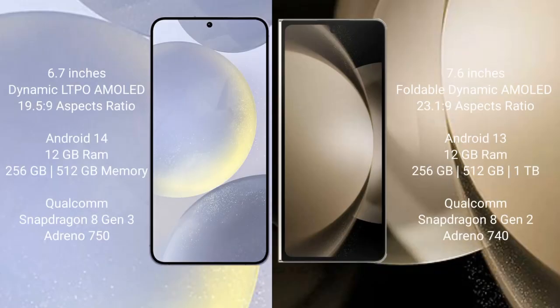Samsung Galaxy S24 Plus comes with a 6.7-inch Dynamic LTPO AMOLED display and aspect ratio of 19.5:9. Samsung Galaxy Z Fold 5 comes with a 7.6-inch Foldable Dynamic AMOLED display and aspect ratio of 23.1:9.